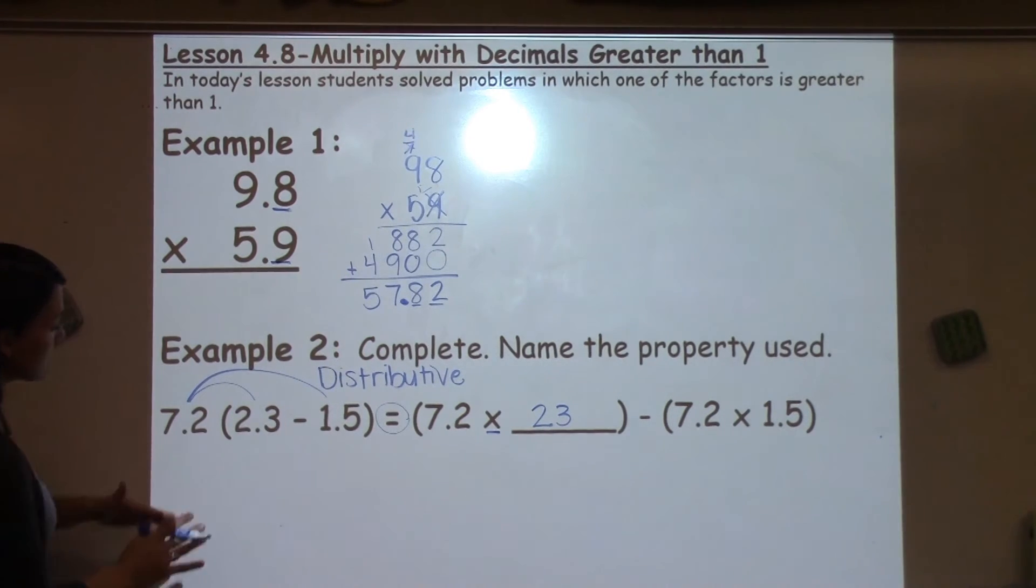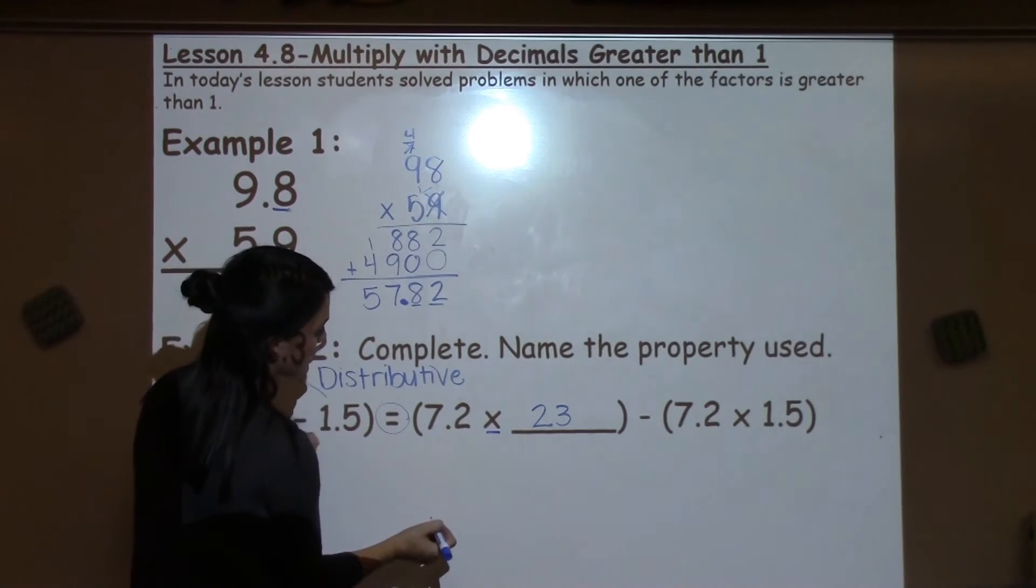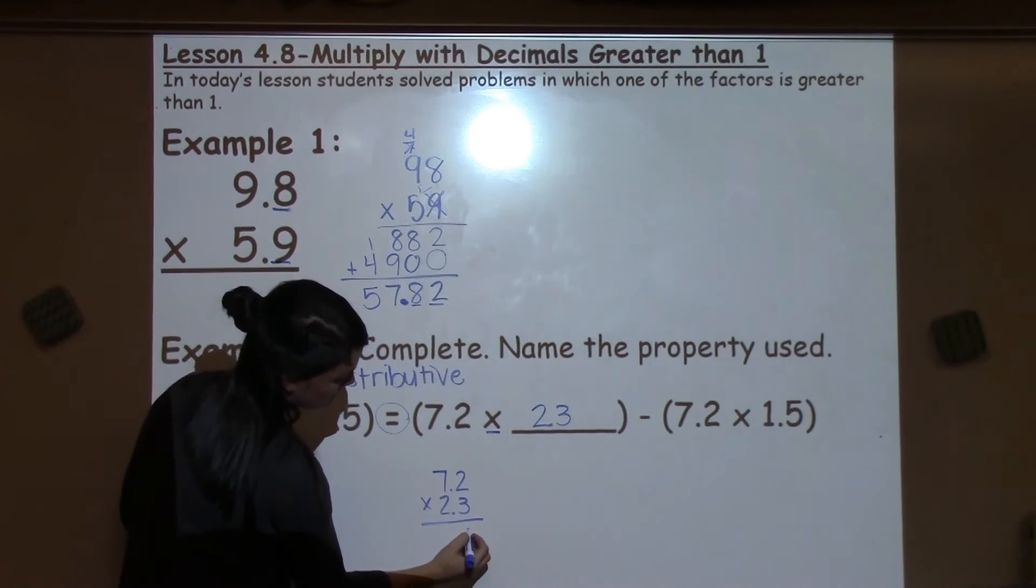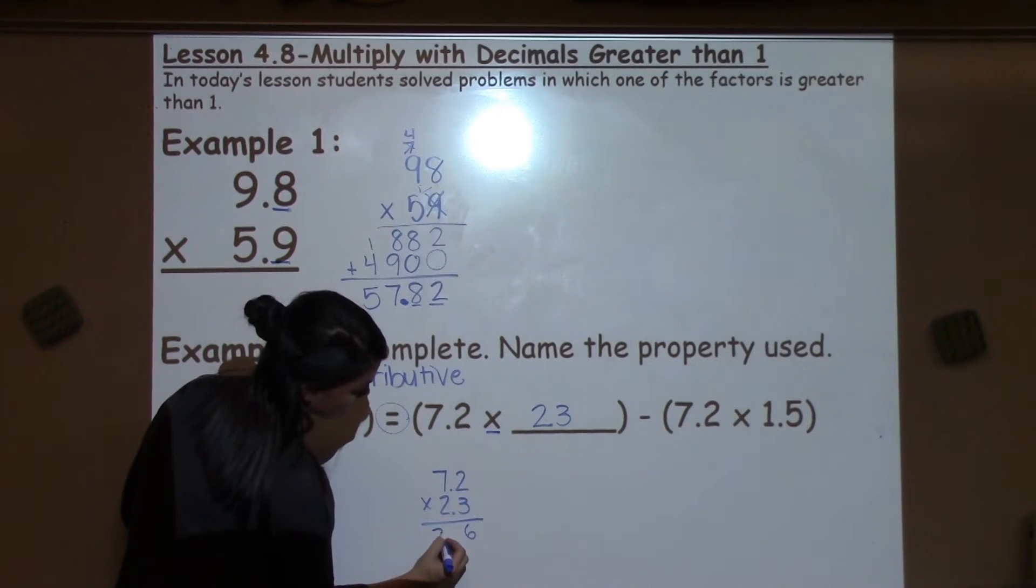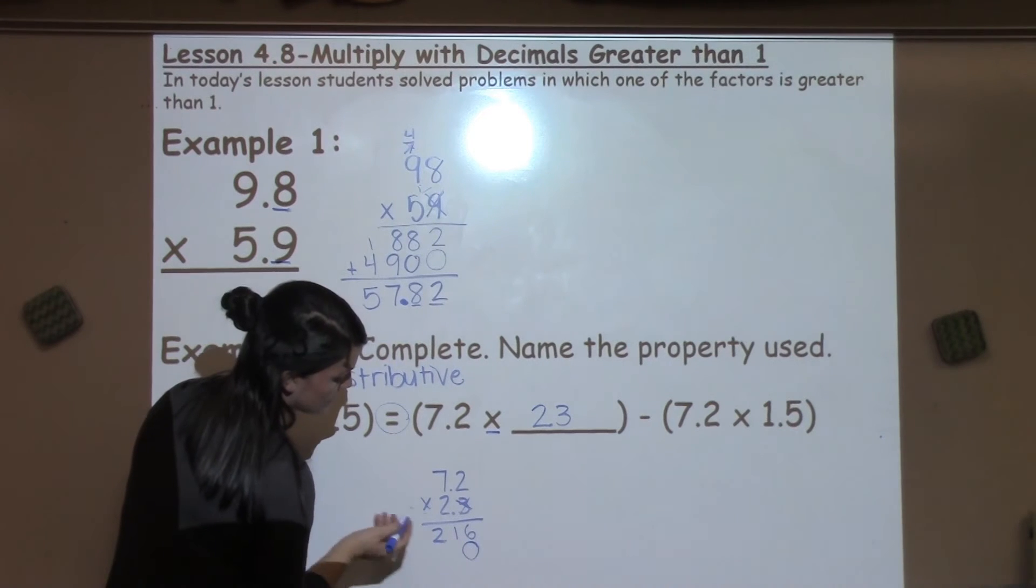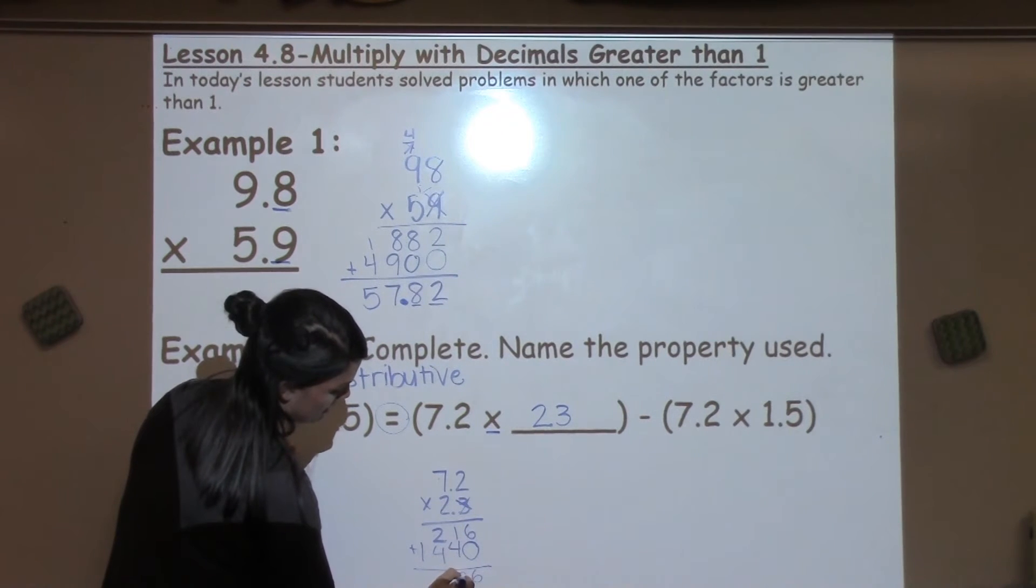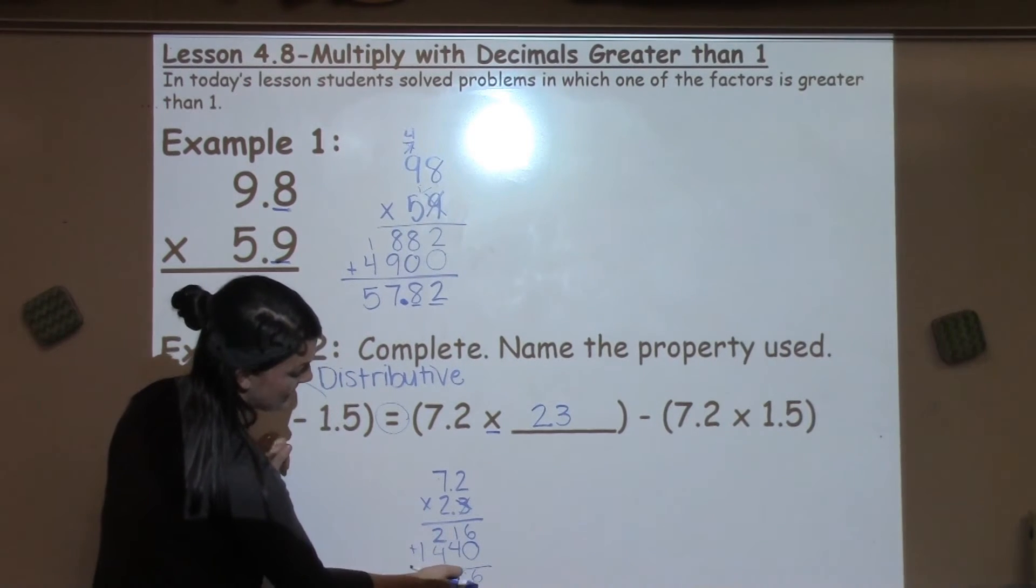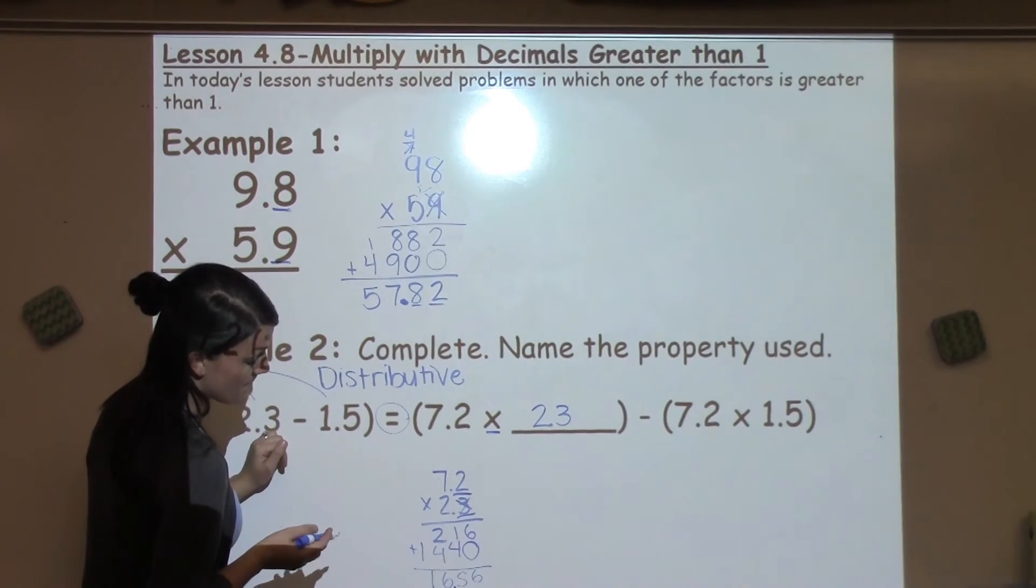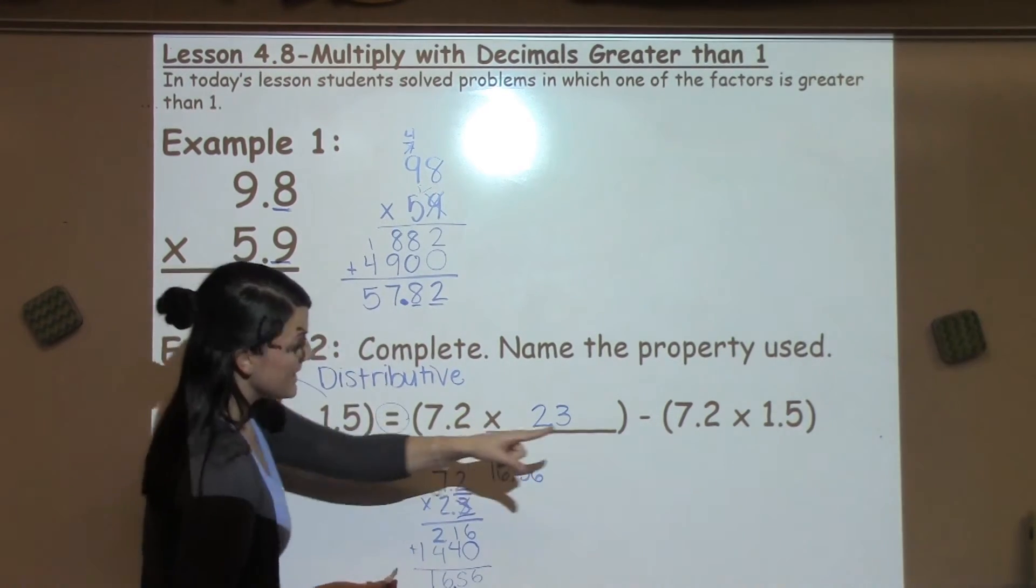What we try to show students is that either way that you do it, you should get the same answer. So we're going to work this side of the problem. I'm going to show 7.2 times 2.3. When I do that, I get 3 times 2 is 6, 3 times 7 is 21. I'm done with the 3. 2 times 2 is 4, 2 times 7 is 14. When I add, I'm going to get 1656. I have 2 total numbers behind the decimal, so this first part of the problem is 16.56.